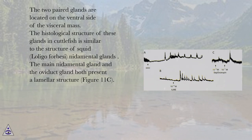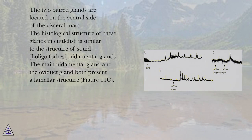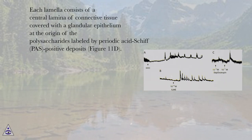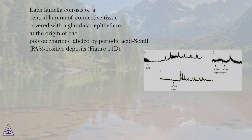The histological structure of these glands in cuttlefish is similar to the structure of squid, Loligo forbesi, nidimental glands. The main nidimental gland and the oviduct gland both present a lamellar structure, figure 11c. Each lamella consists of a central lamina of connective tissue covered with a glandular epithelium at the origin of the polysaccharides labeled by periodic acid shift, PAS positive deposits, figure 11d.